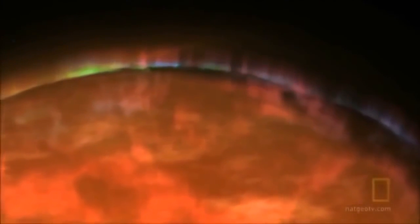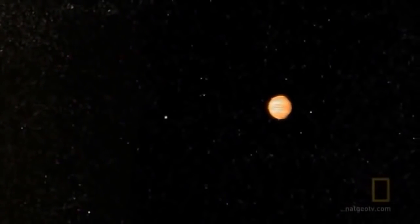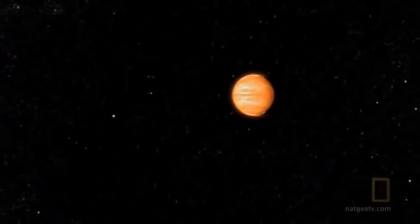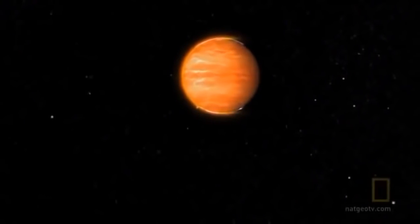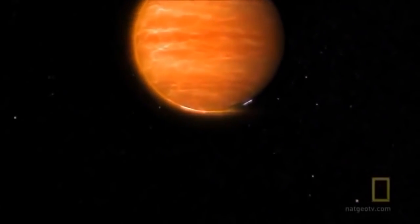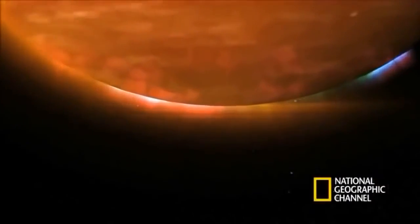A gas giant is a planet made mostly of hydrogen and helium. Only the outer layers are gas, but inside, hydrogen and helium is compressed to huge pressures that doesn't resemble a gas at all. Unlike anything found in our solar system, this is an entirely new class of planet, what scientists call a hot Jupiter.